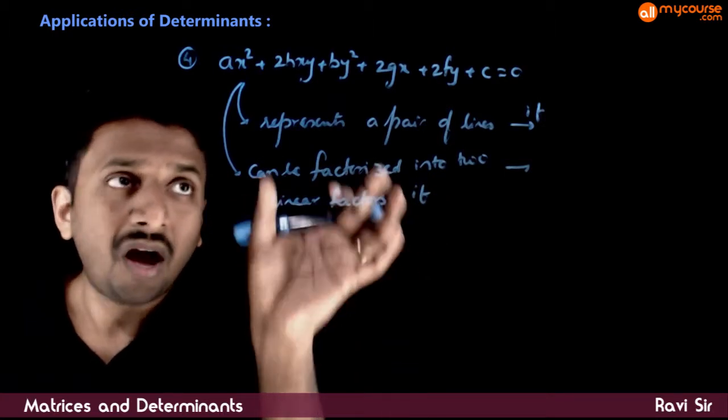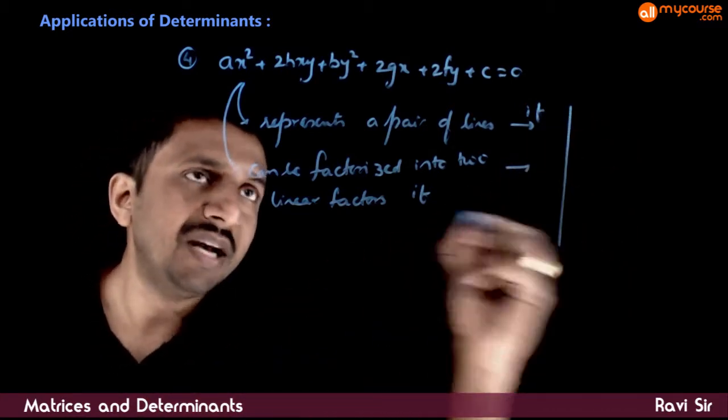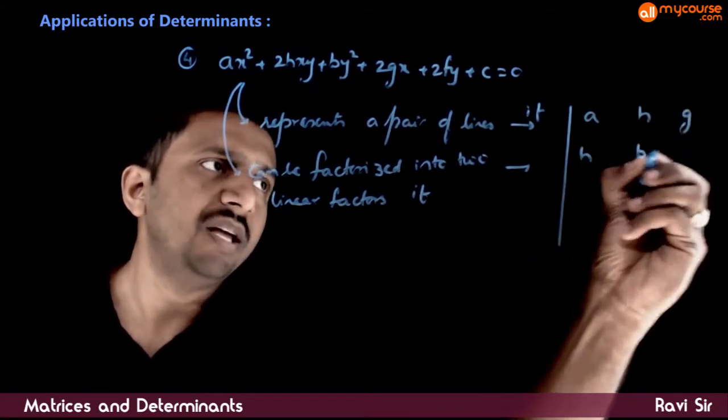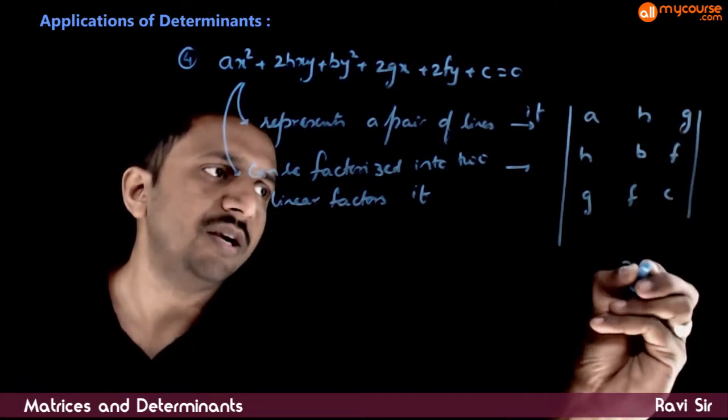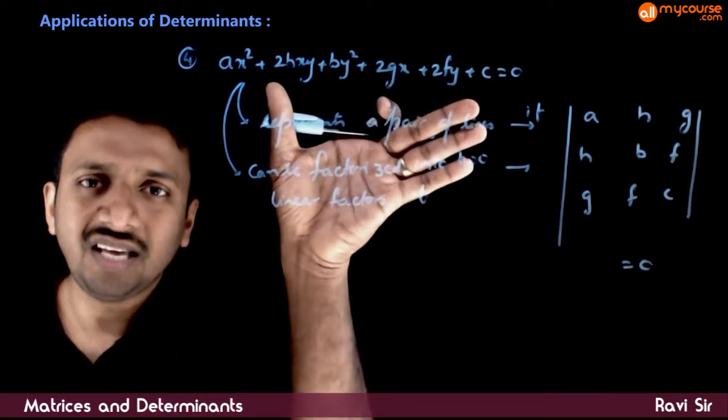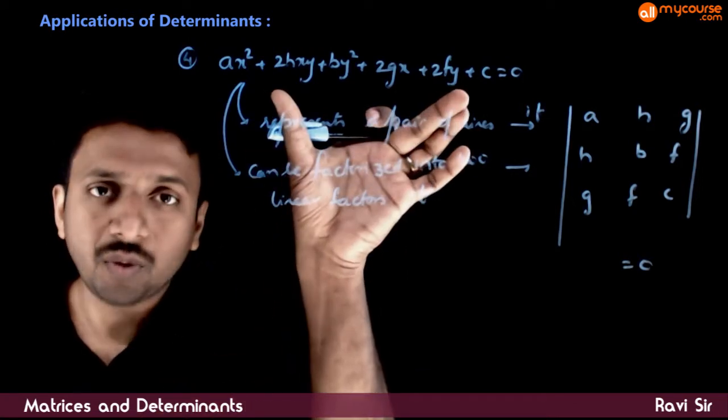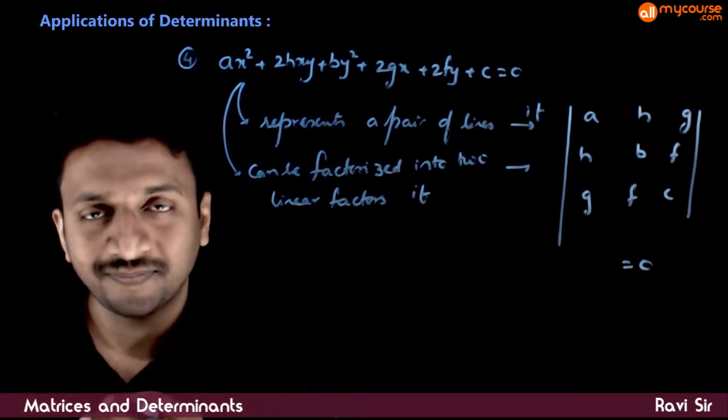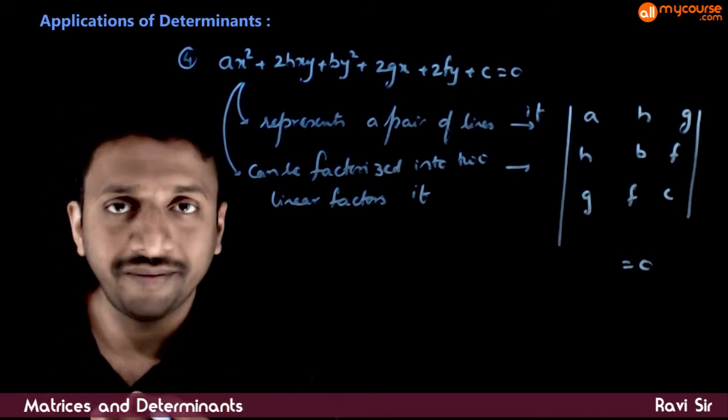This equation represents a pair of lines if it can be factorized into two linear factors, or equivalently, if the determinant with rows (a,h,g), (h,b,f), and (g,f,c) equals 0. If this determinant equals 0, then the equation represents a pair of lines. These are the important applications of determinants in coordinate geometry.